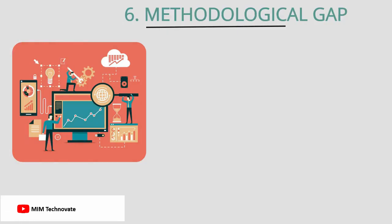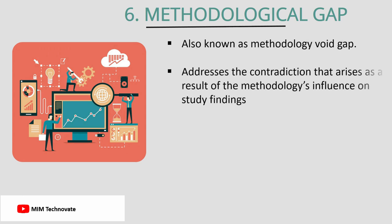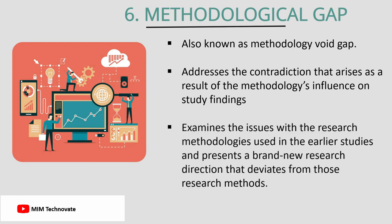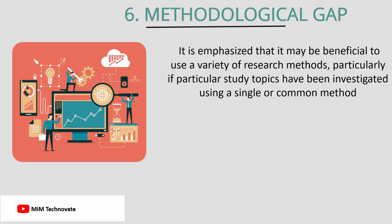Methodological gap, known as methodology void gap, addresses the contradiction that arises as a result of the methodology's influence on study findings. This gap examines the issues with research methodologies used in earlier studies and presents a brand new research direction that deviates from those methods. It is emphasized that it may be beneficial to use a variety of research methods, particularly if particular study topics have been investigated using a single or common method.